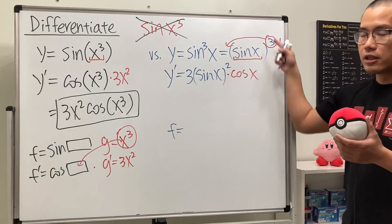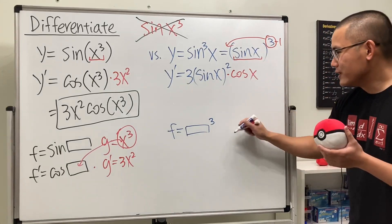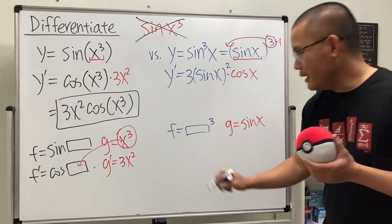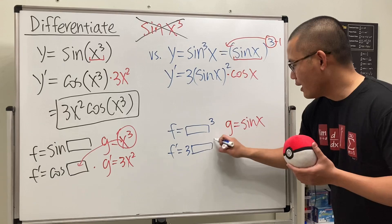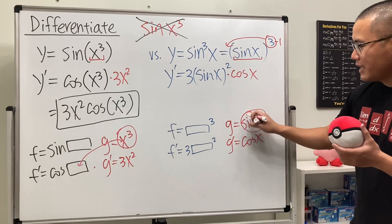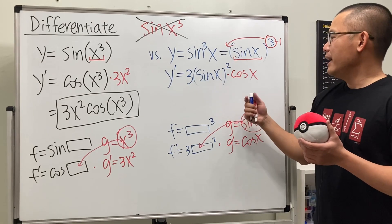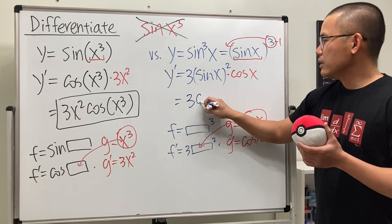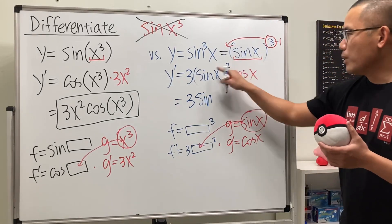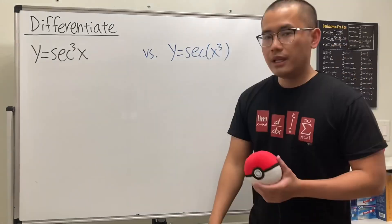Using the box method: the outer function is a box to the third power, and the inner function g is sine x. The derivative of a box to the third power is three times box to the second power, and the derivative of sine x is cosine x. Put sine x inside the box and multiply — that gives three sine squared x times cosine x. We write the final answer as 3 sine squared x cosine x.